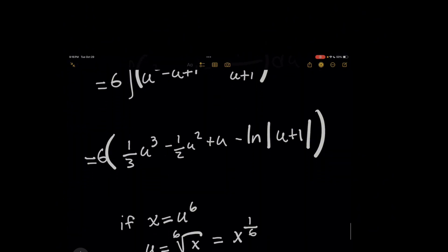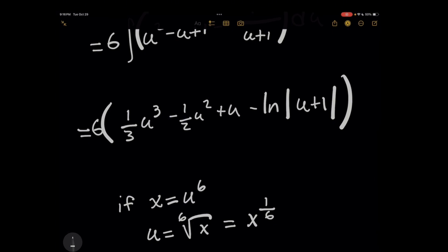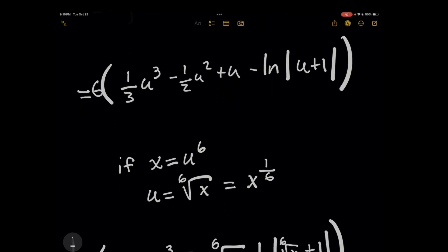Now I'm going to go ahead and distribute the 6 term. But before I do that, remember that because x equals u to the 6, and now we need an answer in terms of x, you can take the 6th root of both sides to find out that u is going to be the same as x to the 1/6.